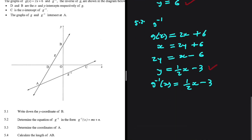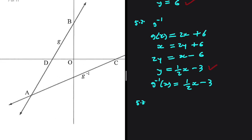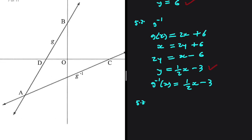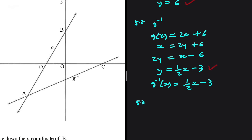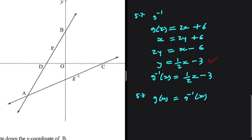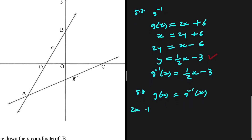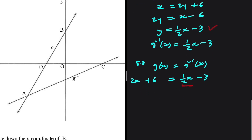Let's move to 5.3. In 5.3 we're supposed to find the coordinates of a. A is where g of x and g inverse intersect. So in order to find the coordinates of a, we have to equate the two equations. If we do that, we're going to have 2x plus 6 equals a half x minus 3. Taking the half x to the left-hand side, I get 3 divided by 2 times x equals minus 9.